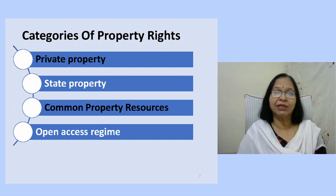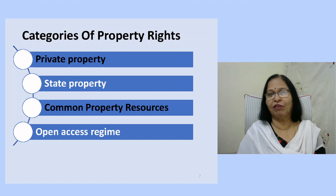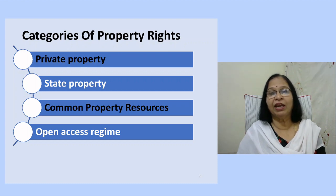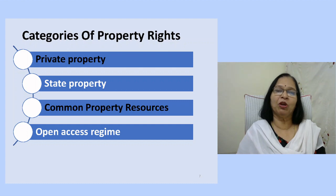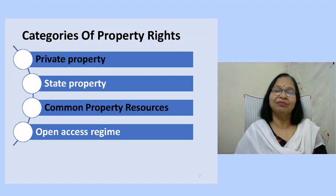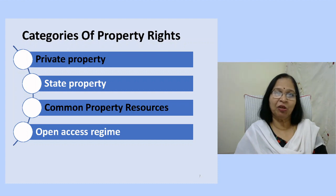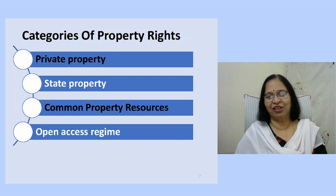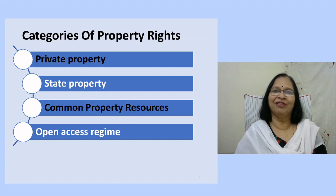Thus, when property rights are not clearly defined, environmental resources are subject to market failure and market transactions cannot happen. Desirable activities cannot be sustained and undesirable activities cannot be stopped because there is no ownership over these resources. The next video will be on externalities as a cause of market failure.